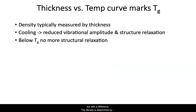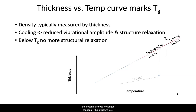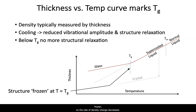The density increases too, but with a difference. The density is determined by two components: the vibrational amplitude that stretches the structure, and the configuration — that is, how the atoms are packed. On decreasing temperature, the structure shrinks because of reduced vibration and collapsing to a lower energy configuration. Below Tg, the second of these two no longer happens. The structure is frozen so that the rate of density change decreases.